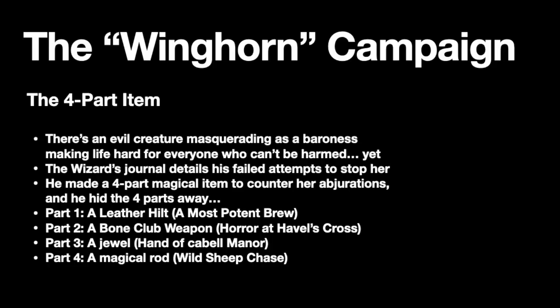That detail could be some kind of cryptic final entry about how the Baroness is closing in — let your players draw their own conclusions. Also, the journal will name these four pieces, and one of them is sitting right next to the journal. We're going to make this first item a special leather hilt for a club weapon. The second will be a magical club made out of bone, the third is a particular jewel that sockets into the club, and the fourth will be a magical rod that also attaches to the club. Only when joined as a whole can this device work. The journal could include some kind of incantation your party can read aloud that will help guide them from one piece to the next — that's up to you if you feel like your PCs need that. When the party leaves the wizard's tower, they're at level two, and we transition into the second one-shot, Horror at Havel's Cross.